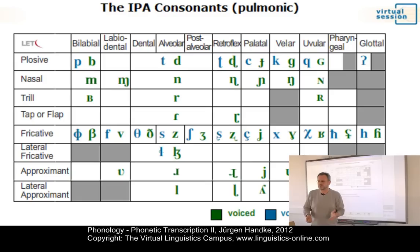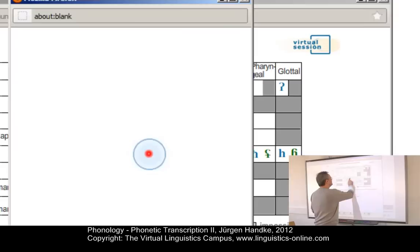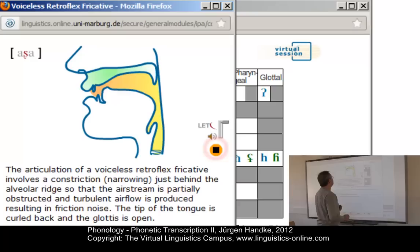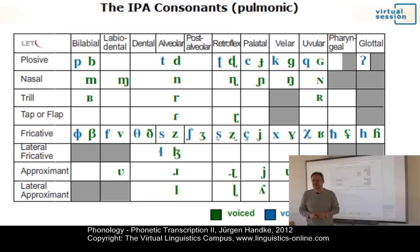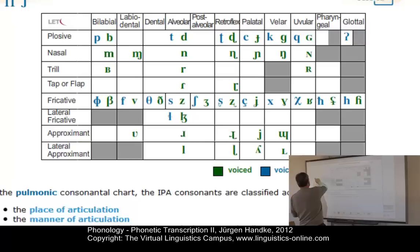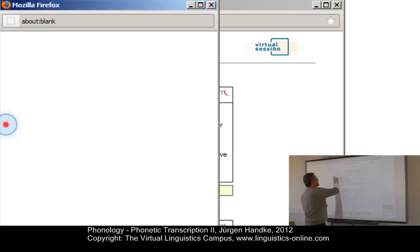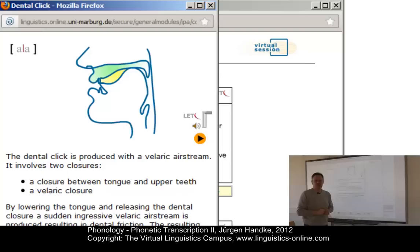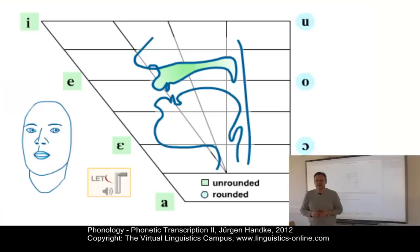Here you see the system of consonants as provided by the International Phonetic Association. They are grouped according to place and manner of articulation and the state of the glottis — that is, whether they are voiced or not. This is a voiceless retroflex fricative, and the symbol is on the chart. In addition to these pulmonic consonants, we also have non-pulmonic consonants and an additional set of symbols — for example, a click consonant that is produced with a velaric airstream.